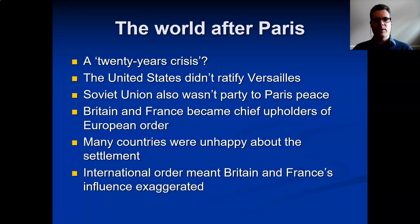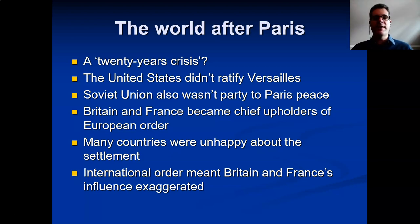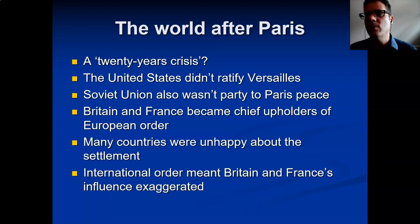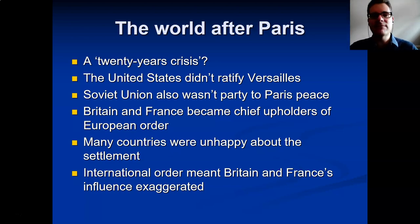One reason for this Eurocentric character is that various major powers chose to exclude themselves from the system. Obviously the United States descended into an isolationist policy, but the Soviet Union also practiced its own version of isolationism for much of the 1920s and 1930s. When it became apparent that world revolution was not going to take off, Lenin — and ultimately Stalin — decided on a policy of 'socialism in one country': consolidating the revolution at home.